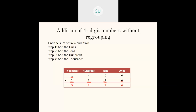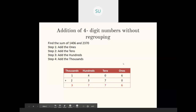Then we add. You always start from the lower place value. First add the 1's: 6 plus 0 is 6. Then move to the 10's place: 0 plus 7 is 7. Any number added with 0 gives that number itself. Then 4 plus 3 is 7. And 1 plus 2 is 3. So the answer is 3,776.